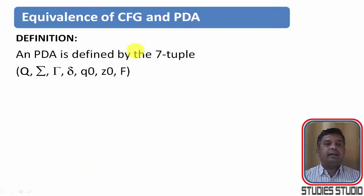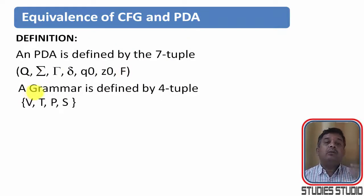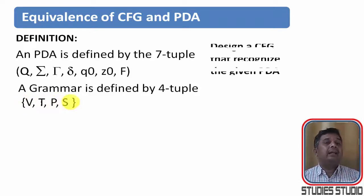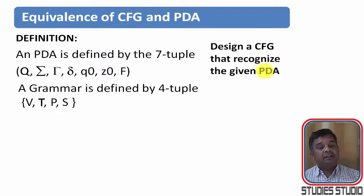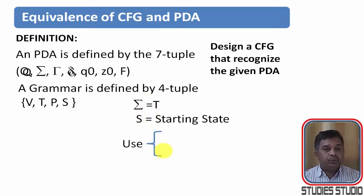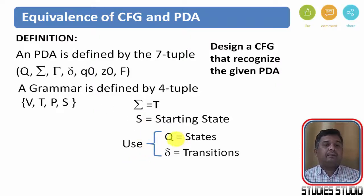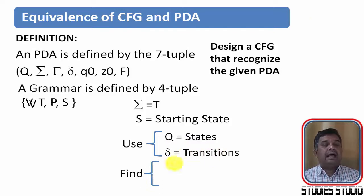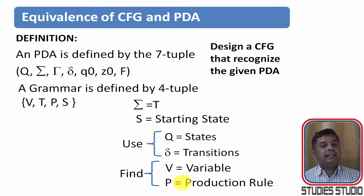A PDA is defined by the seven-tuple Q, Sigma, Tau, Delta, Q-naught, Z-naught, and F. We want to construct a grammar defined by the four-tuple V, T, P, and S. What we have in common: Sigma is the same as the terminal symbol T, S is the starting symbol, and we are going to use Q and Delta — the states and transitions — to find V, the variables, and P, the productions of the grammar.